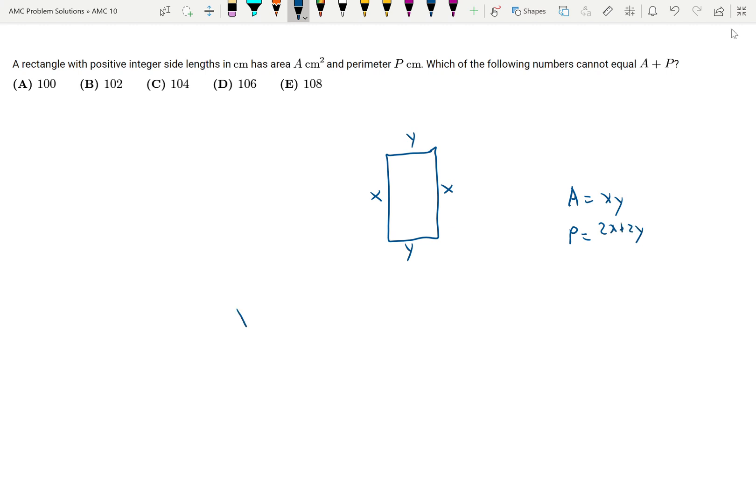So therefore A plus P is equal to 2x plus 2y plus xy. We can factor this, which is going to be the same as x plus 2 times y plus 2.